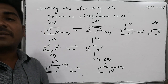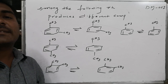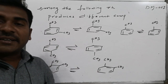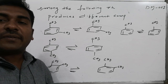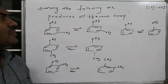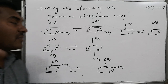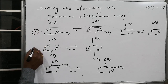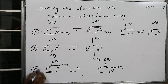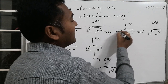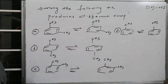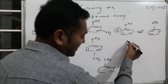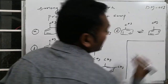Now, these starting materials are subjected to ozonolysis, and one of them will produce different compounds. We label them as compound A (meta-dimethylbenzene), compound B (para-dimethylbenzene), compound C (ortho-dimethylbenzene), and compound D (toluene/methylbenzene).